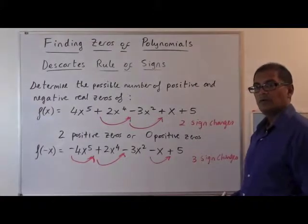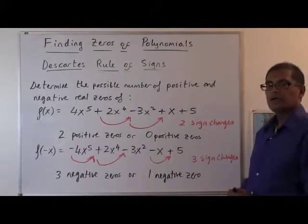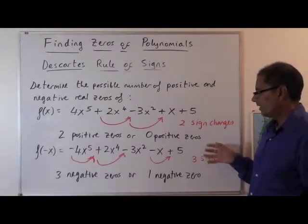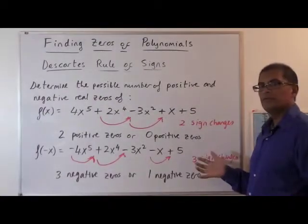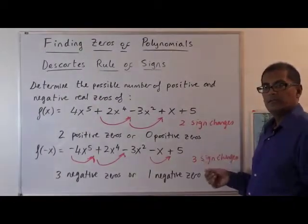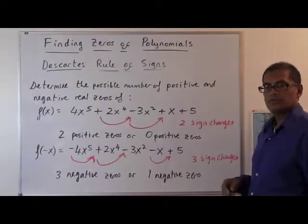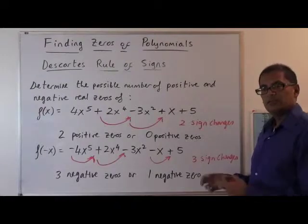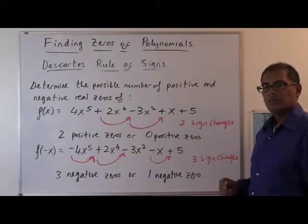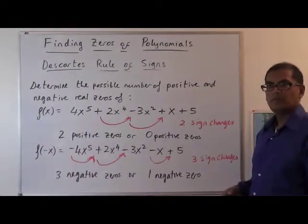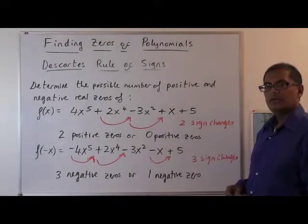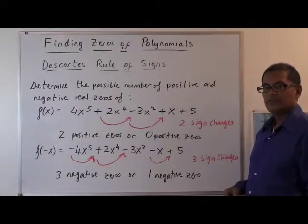So we have three negative zeros or one negative zero. Descartes' rule of signs allows us to narrow down the possibility of our real zeros, and combined with the rational zero theorem, we can narrow down what our potential zeros are, and then using synthetic division, we can start to break apart our polynomial and find more zeros. So let's do an example using these theorems.